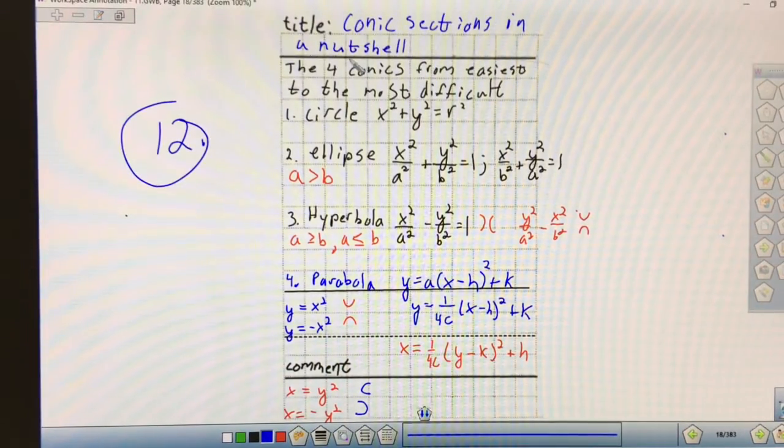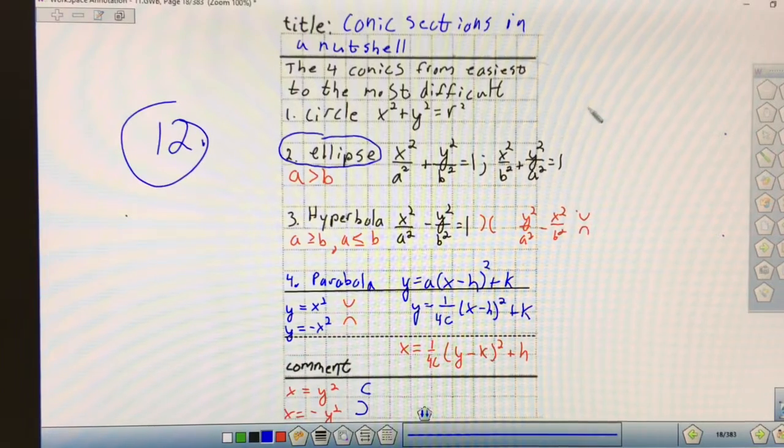This is page 12. It's conic sections in a nutshell. The reason I throw the note for conic sections into this pre-calculus/calculus notes is because the ellipse is the reason why Newton invented calculus. He was trying to calculate planetary motion and the orbits of planets are elliptical around the sun. We've done that diagram several times in this class.